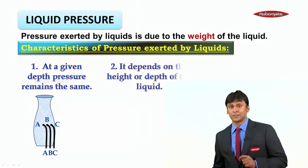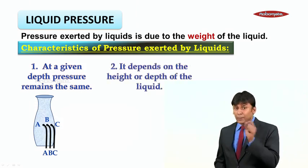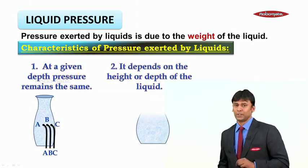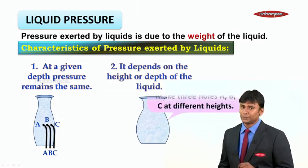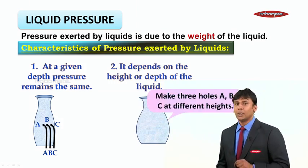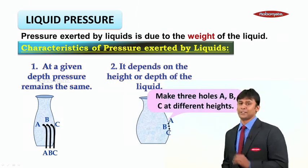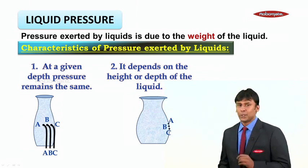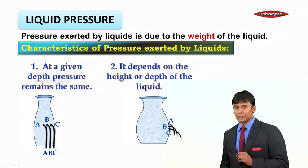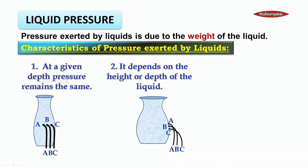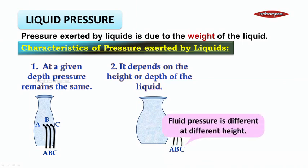The second characteristic is that liquid pressure depends on the height or depth of the liquid. That means, if I make three holes A, B, and C at different heights, when I pour water, you can see the pressure at A, B, and C is different. So fluid pressure is different at different heights.